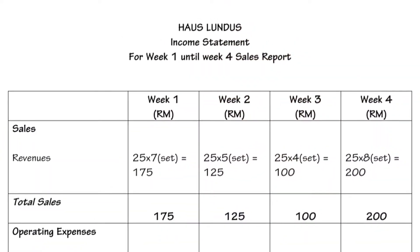The total for both sections is 192 ringgit. For the Haus Lundus income statement from week 1 to week 4, different members sold our product. For week 1, we managed to sell 7 sets at 25 ringgit per set, gaining 175 ringgit. Week 2, we sold 5 sets for 125 ringgit. Week 3, we sold 4 sets for 100 ringgit. And in week 4, sales increased to 8 sets for 200 ringgit.